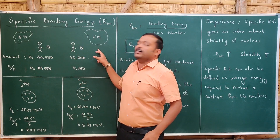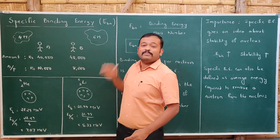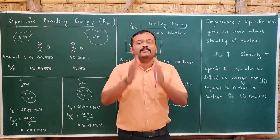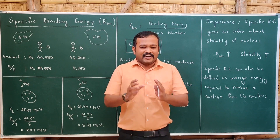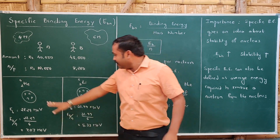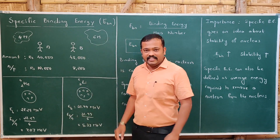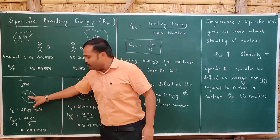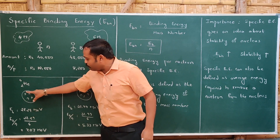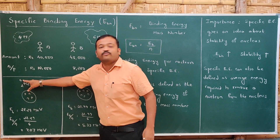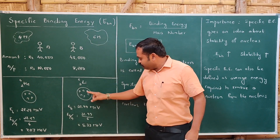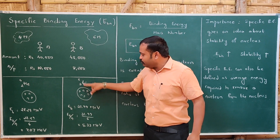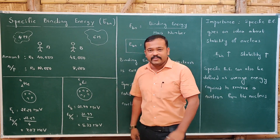Even though B earns more, since he has more members in his family, he is not stable in his life comparatively. In the similar way, it is applied for the nucleus also. Let us take two nuclei: one is Helium and another one is Lithium. Helium is ²He⁴, which has 2 protons and a mass number of 4. Let us compare.